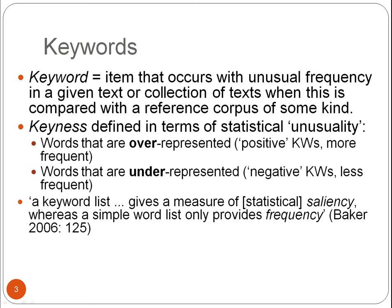The output of a keyness calculation is a list of keywords. A keyword can thus be defined as an item that occurs with unusual frequency in a given text or collection of texts when this is compared with a reference corpus of some kind. Keyness is defined in terms of statistical unusuality.